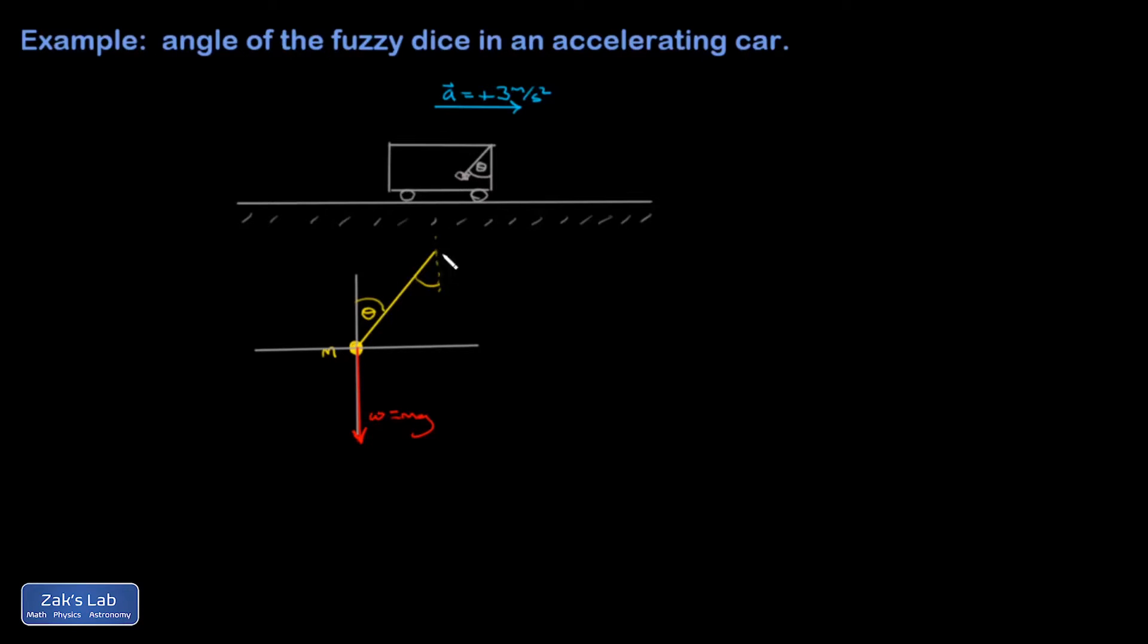And then the string is the only other thing that's interacting with this mass. It's pulling up at this angle of theta and it has a tension in it that we don't know.